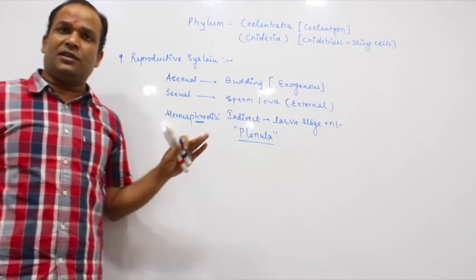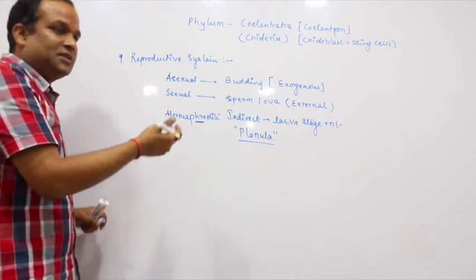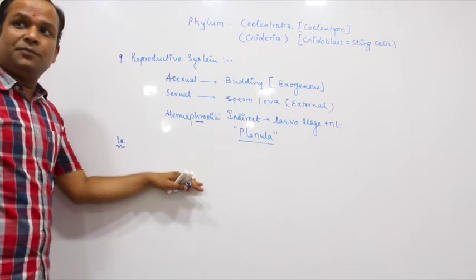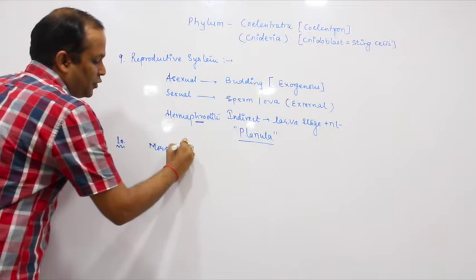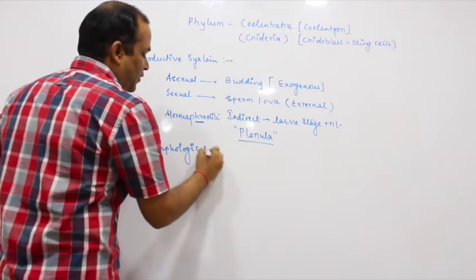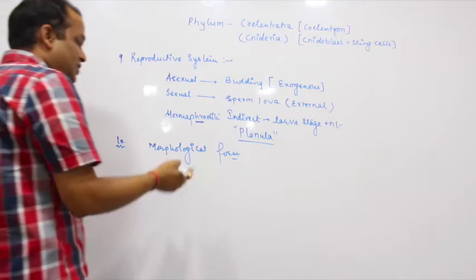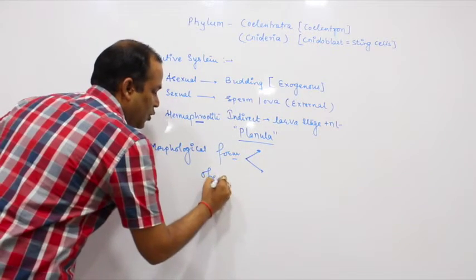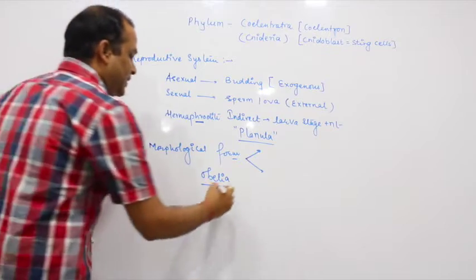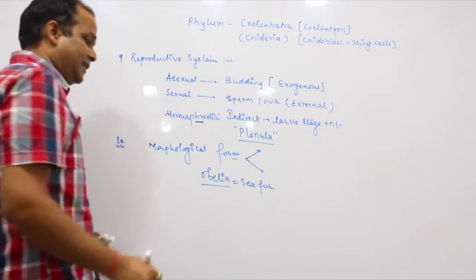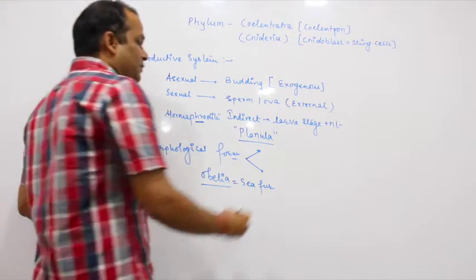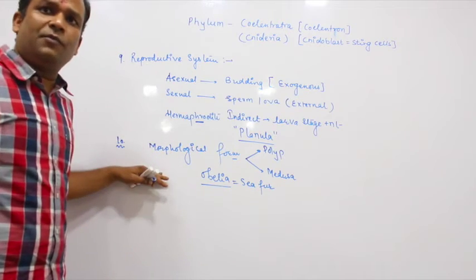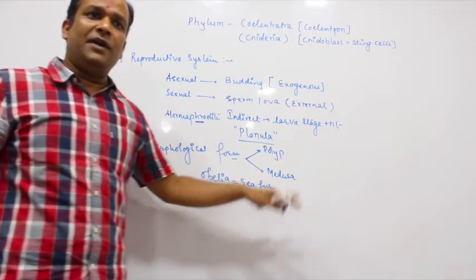Here's a unique feature in your textbook - the uniqueness of cnidarians. Some organisms have more than one form morphologically present. Morphological forms are present in some organisms, more than one. Like Obelia, also known as sea fir. This Obelia contains more than one morphological form. One is polyp and the other is medusa. Different morphological forms of the same organism.